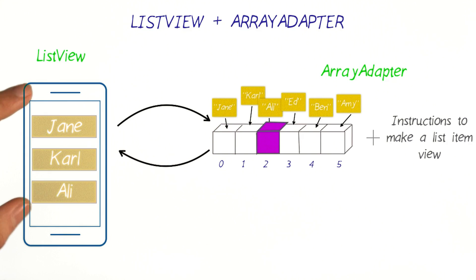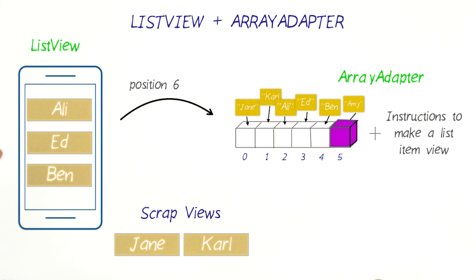Now when the screen is full, the list view will stop asking for more list items from the array adapter. The list item views are only created on demand when needed. When the views are scrolled off screen, they're added to the scrap pile.